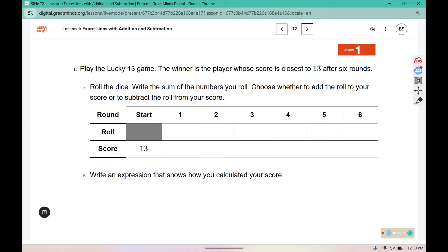It says write an expression that shows how you calculated your score. So we're going to start by rolling two dice. I ended up with a four and a five. It says to write the sum of the numbers. Well, four plus five is nine. And then we decided we're going to either add or subtract from our score. So I have 13. I'm going to subtract nine. 13 minus 9 gives me a score of four. Then we're rolling again.